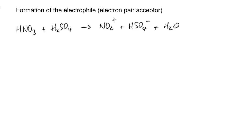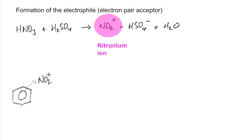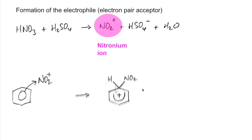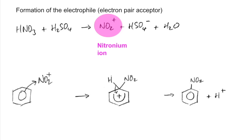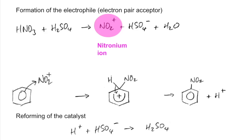The two concentrated acids react to form the nitronium ion, which is the key ion that reacts with the benzene ring. A pair of electrons from the pi electron cloud is attracted to the nitronium ion, giving an unstable intermediate — it's important to cover five carbons with the partial pi electron cloud and include the plus sign in the middle. The intermediate stabilises by losing H⁺, with a pair of electrons going back to reform the pi cloud, giving nitrobenzene and H⁺. Finally, H⁺ and HSO₄⁻ reform the sulfuric acid catalyst.